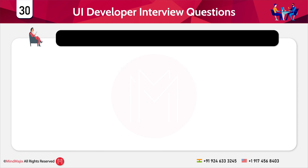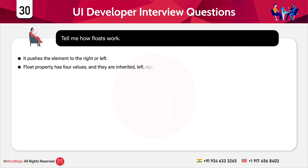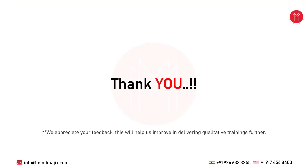The next question is: tell me how float works. Float pushes an element to the right or left. The float property has four values: inherited, left, right, and none.